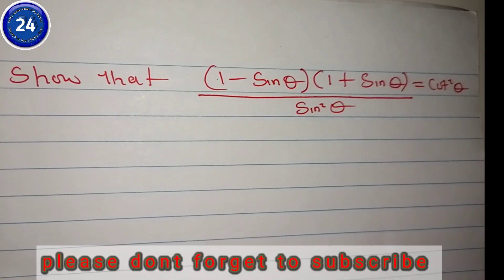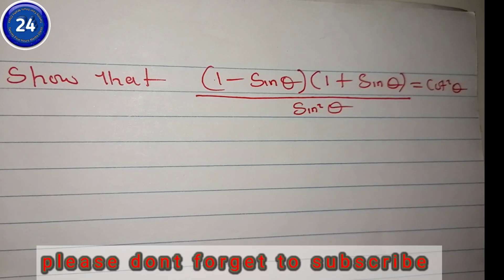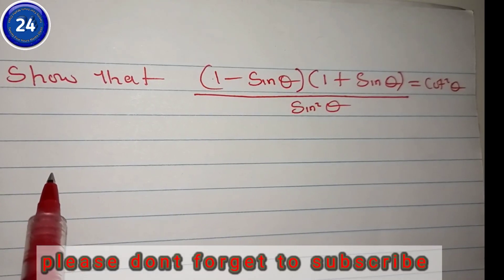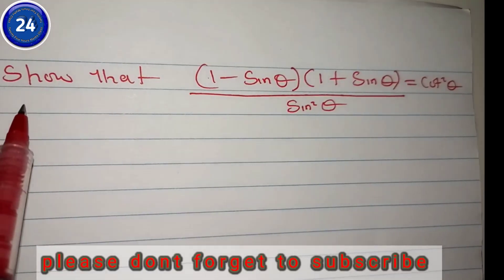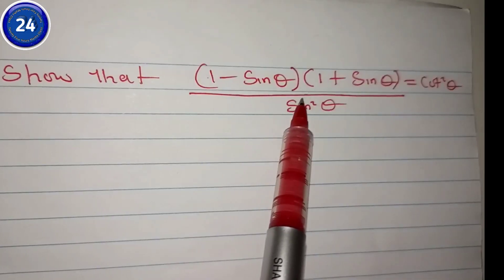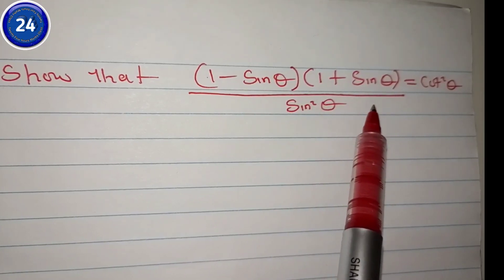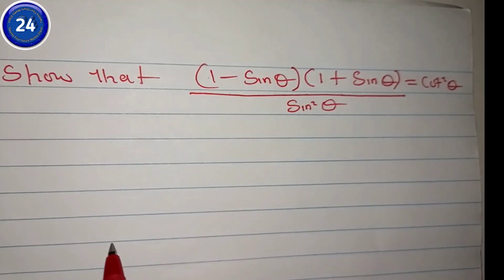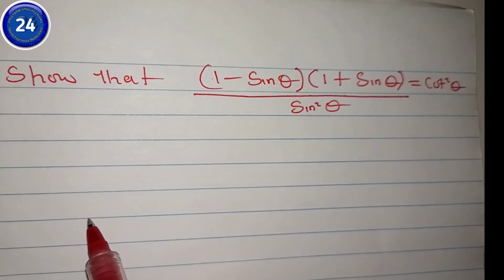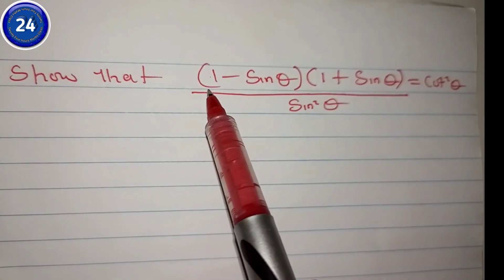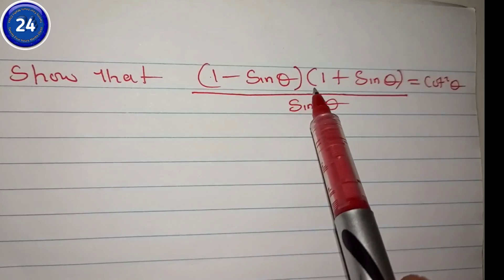Hello everyone. In today's tutorial I'm here with another question on trigonometric identities. The question says: show that one minus sine theta, in bracket, one plus sine theta, all over sine squared theta, is equals to cotangent squared theta.